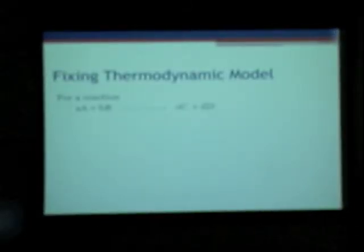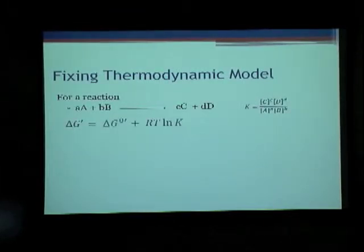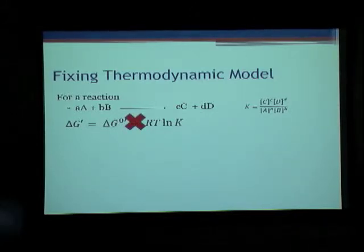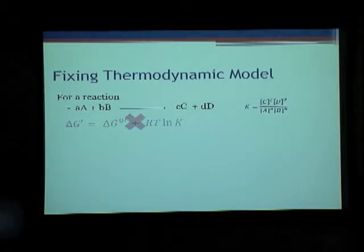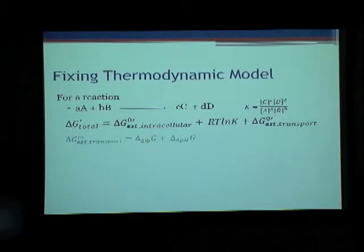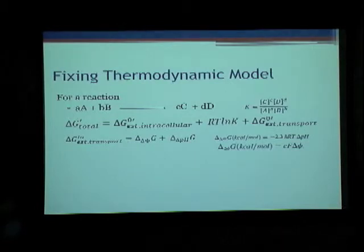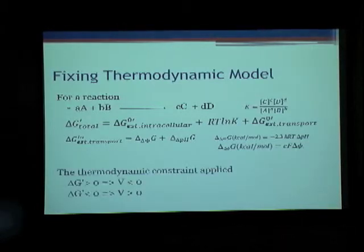For the first part: for a reaction involving transport of metabolites across the membrane, the transport term also has to be included in the delta G calculation. This transport term has two components — one due to the electrochemical gradient and the second due to the pH gradient — which are calculated using specific formulas. When we apply these constraints, we get much better results.